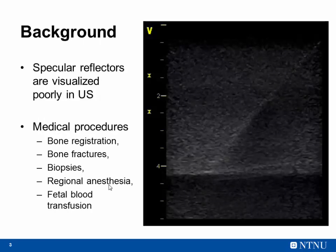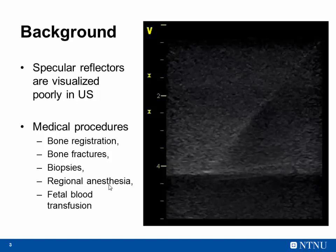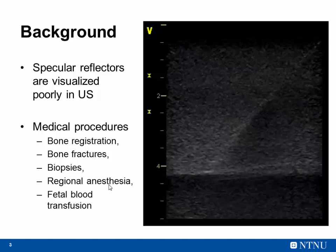As you may know, specular reflectors are poorly visualized in ultrasound. Here we see an image of a needle in an agar phantom. It's quite difficult to distinguish the needle, but only when you move it. It is recognized because we have some shadowing effect just behind it and these two blob patterns that are characteristic of the top of the needle tip when it's facing down.